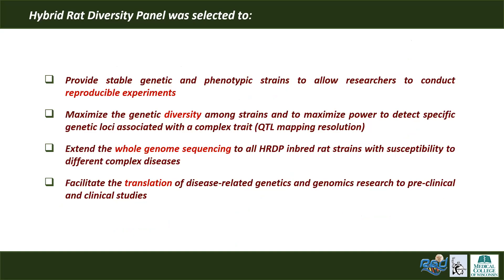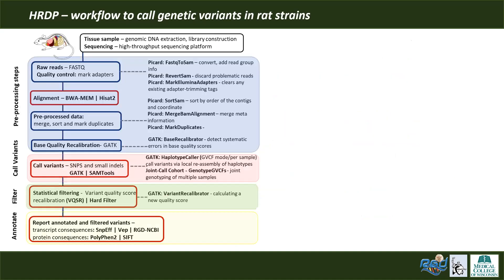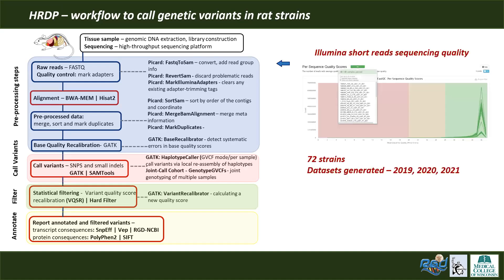The objective of this project is creating a diverse, stable, and reproducible rat reference population so that scientists can discover and characterize molecular mechanisms underlying complex disease-related traits. Part of this effort is identifying and collecting genetic variation for all HRDP strains. I will show you the results from the analysis of whole genome sequencing of Illumina short reads from 72 rat strains.